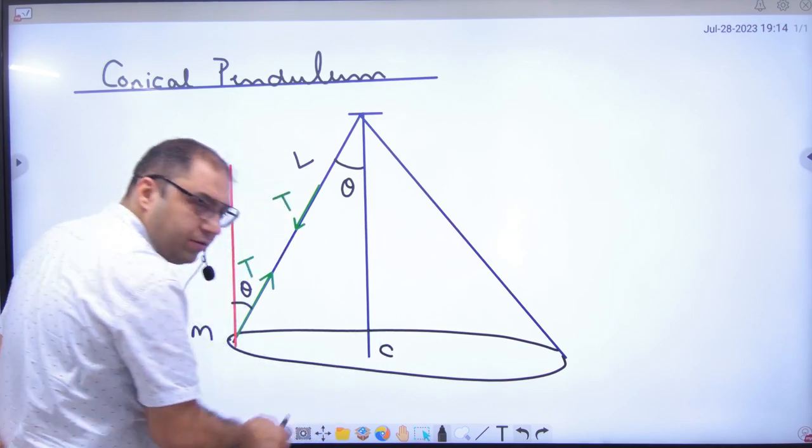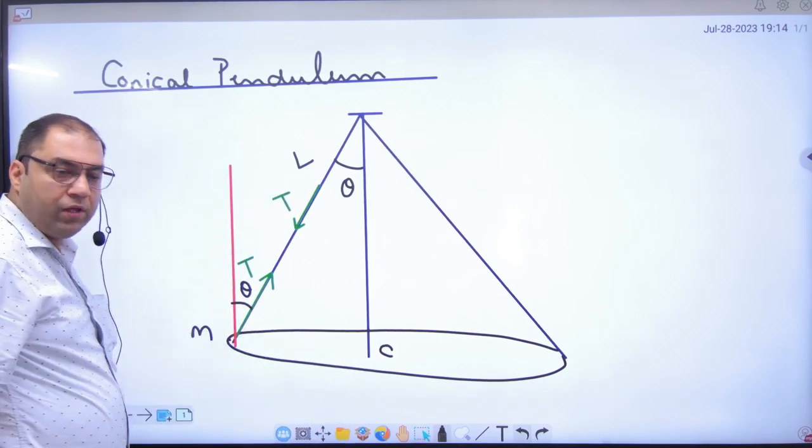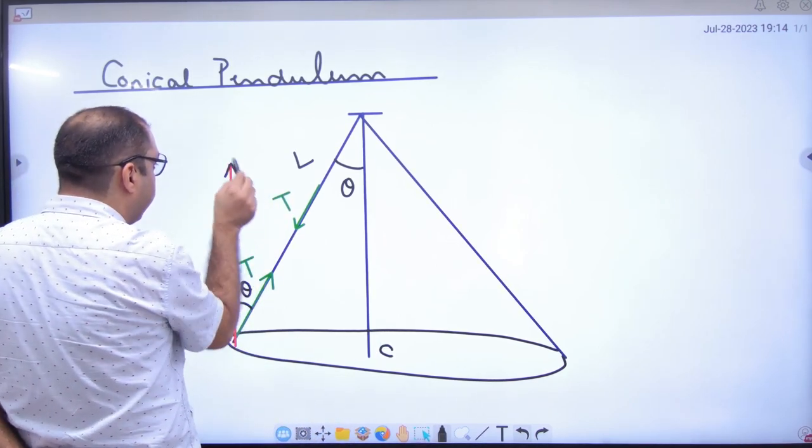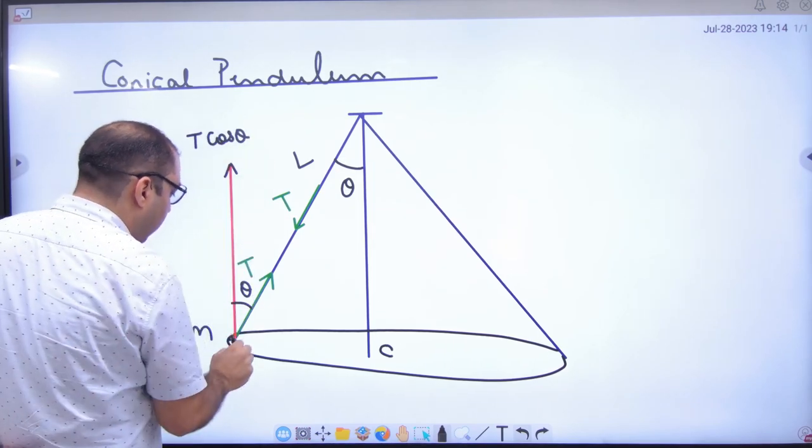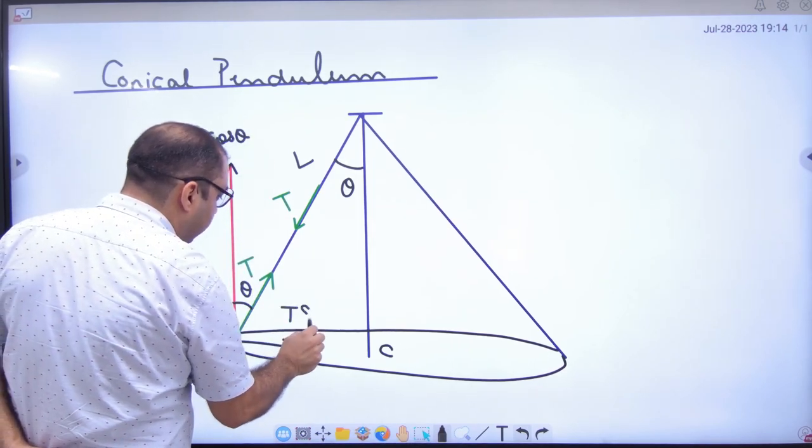Its center is this. So here two components are T cos theta and this component is T sin theta.